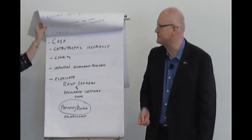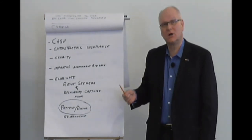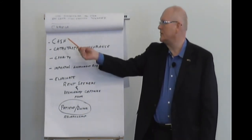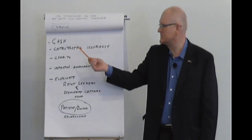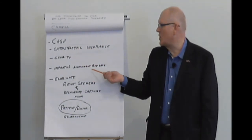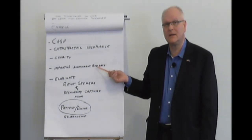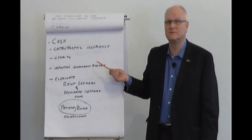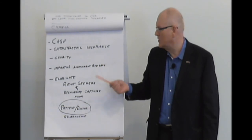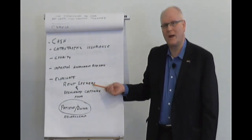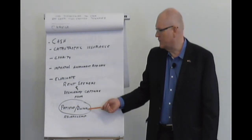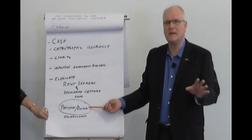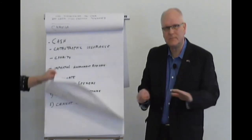So to start to summarize, we have the concept of cash, catastrophic insurance, charity. We need an impartial government referee, no winners, no losers, no crony capitalism. We need to eliminate the rent seekers and the regulatory capture from that exam room. It's just you, me, and my colonoscope. Period.